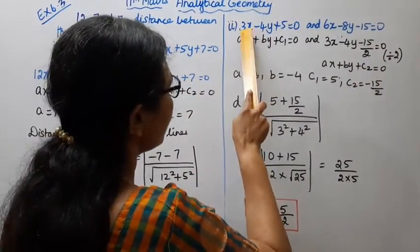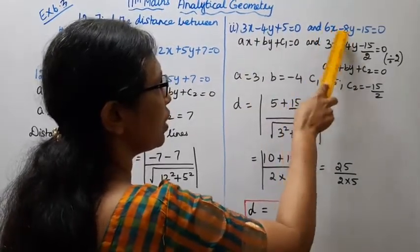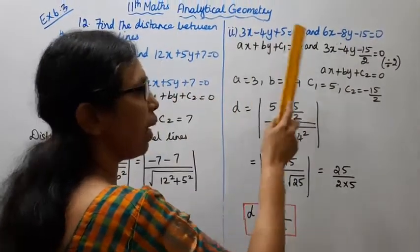x coefficient is 3, y coefficient is minus 4. Here, x coefficient is 6, y coefficient is minus 8. These are parallel lines.